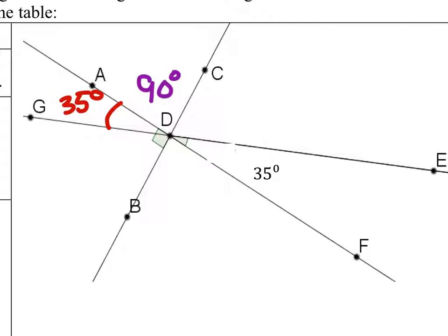And then we have angle ADG, which is complementary with angle BDG right here. So to find this angle, I can do 90 minus the 35, and that would give me 55 degrees right on this one.